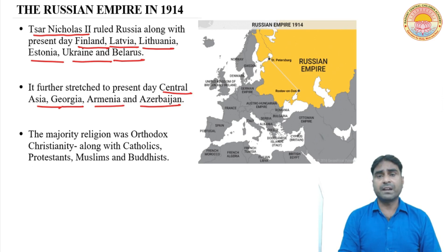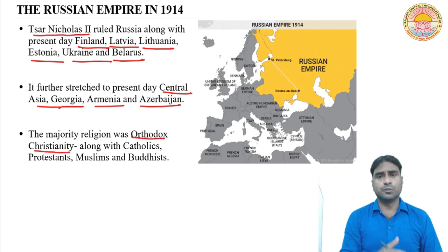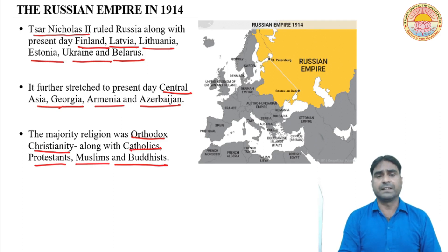If we talk about the religions of the people living there, especially the majority religion was Orthodox Christianity. The main majority was Orthodox Christians. Along with them, there were also Catholics, Protestants, some Muslims, and also Buddhists. So many different kinds of people of so many religions were found in that Russian Empire.